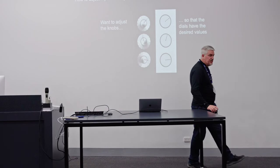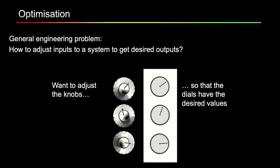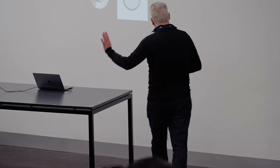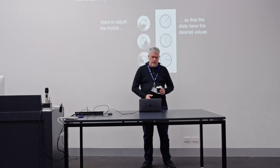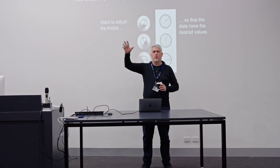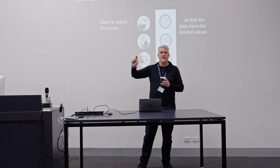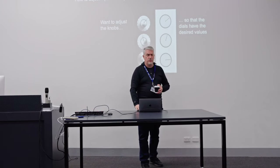In optimization we're often faced with systems where we can control some things and we can measure some things. On the left we've got the things we can control — the knobs — and on the right we've got the things we can measure — the dials. If you're driving a car, the knobs are the steering wheel, the throttle, the brake, and the clutch and gear stick if you drive a manual. What we want to do is figure out how to adjust the knobs so that the outputs have their desired values. This is the game.